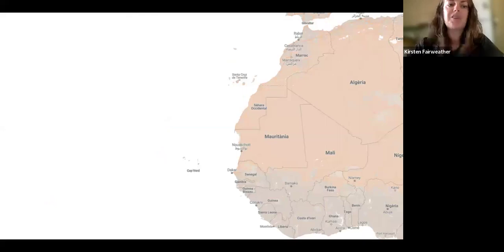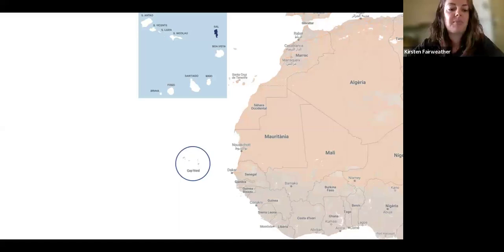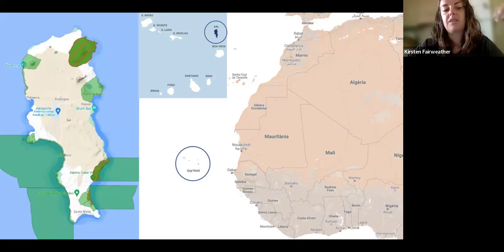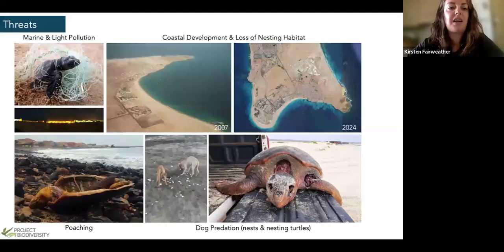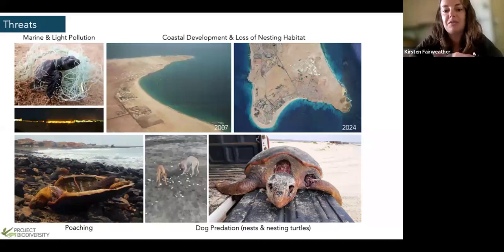For those who don't know, Cabo Verde is a group of islands off the west coast of Africa. I'm talking specifically about Sal Island, which is only about 30 by 12 kilometers. We face our fair share of threats: a large tourist population, development, poaching, light pollution, marine pollution, and unfortunately dog predation — both on nests and on nesting turtles — which is a relatively new impact we're seeing here.